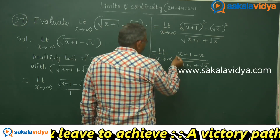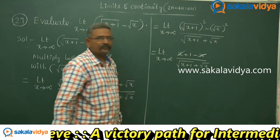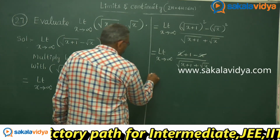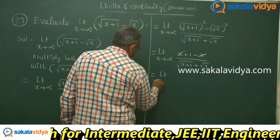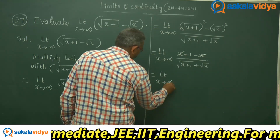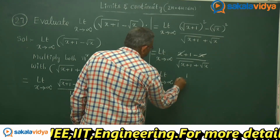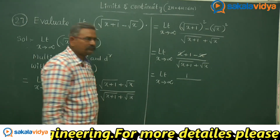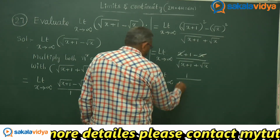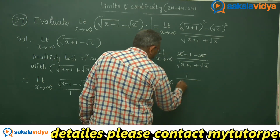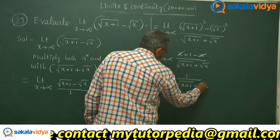This simplifies to limit x tends to infinity of x plus 1 minus x, divided by root of x plus 1 plus root x. Here x and x get cancelled, so we get limit x tends to infinity of 1 divided by root of x plus 1 plus root x.